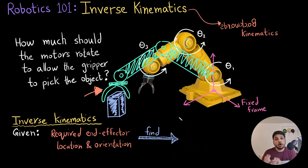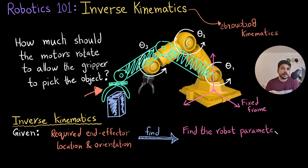And you have to find out what robot parameters are required in order to achieve that. In this case, the robot parameters are the three angles theta1, theta2 and theta3.